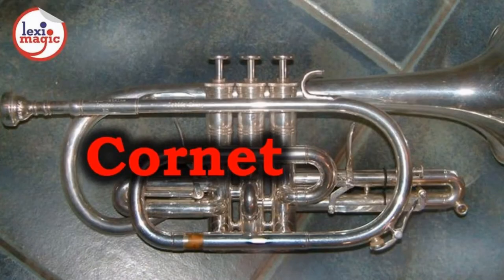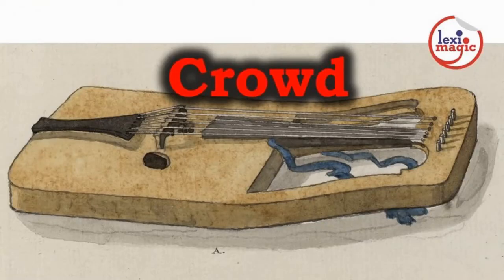A cornet is a trumpet-like brass instrument that became popular in France. It has a mellower tone quality compared to a trumpet. A crowd or krauth is a Welsh stringed instrument that resembles a bowed lyre. The use of the crowd in Welsh folk music dates back to the 11th century.